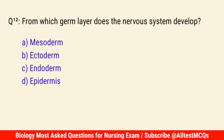Q12. From which germ layer does the nervous system develop? The correct answer is B: Ectoderm.